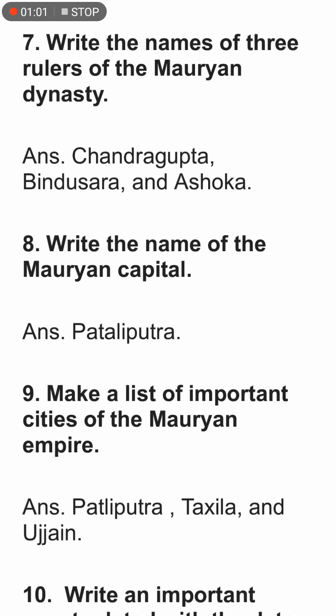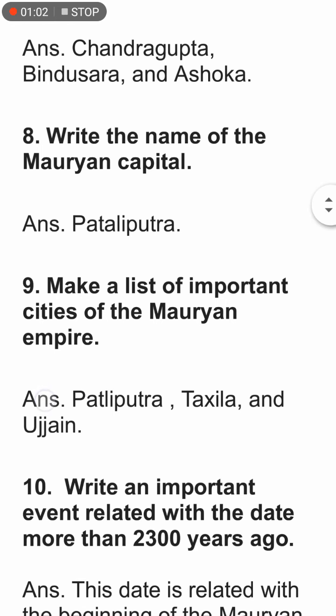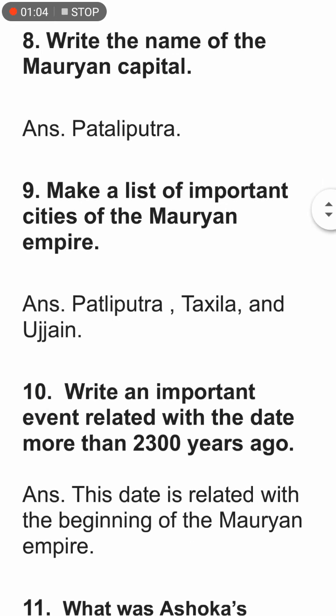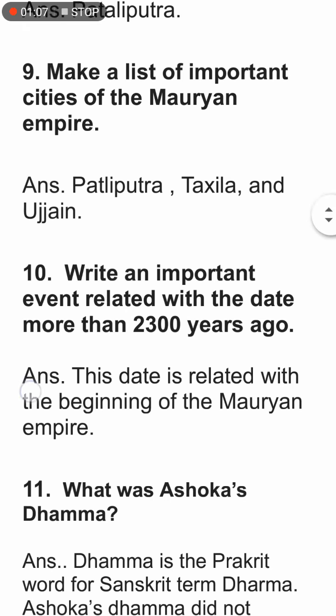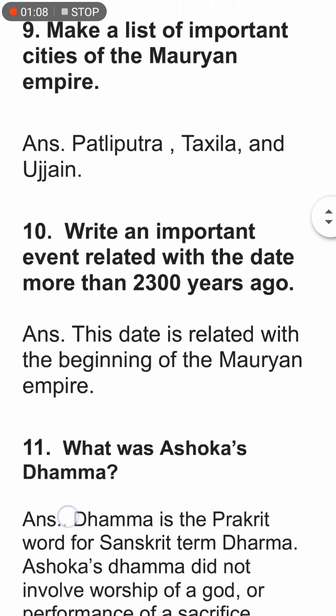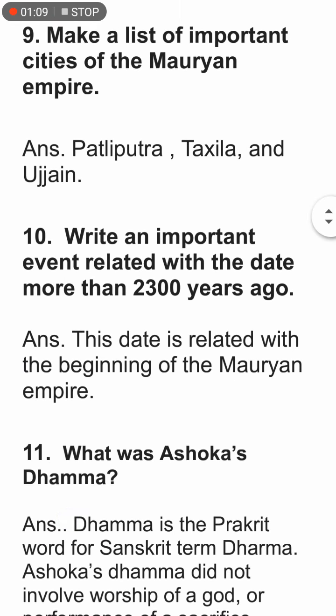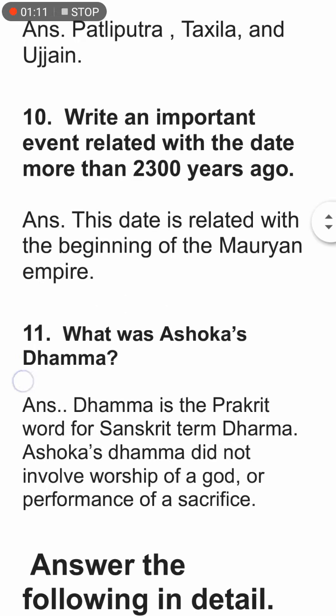Write the names of three rulers of the Maurya Empire — Bindusara, Chandragupta, and Ashoka. Write the name of the Maurya capital — that is Patliputra. Now make the list of important cities: Ujjain, Taxila, and Patliputra.